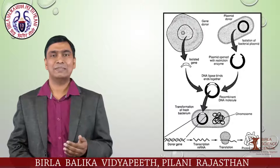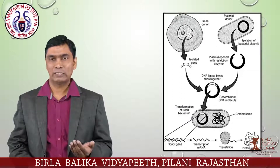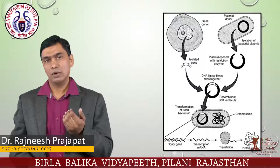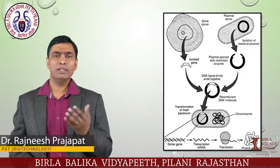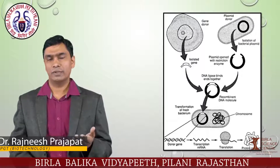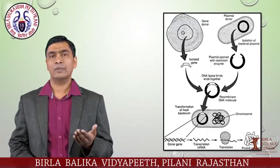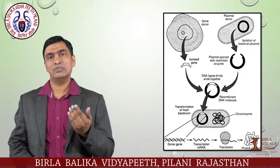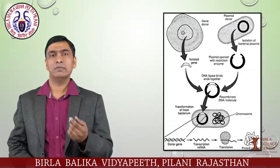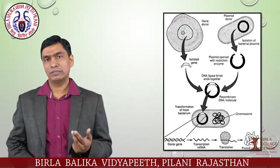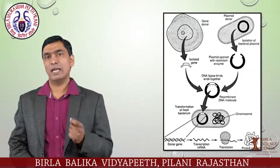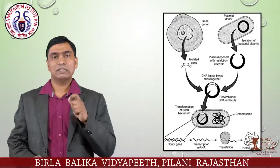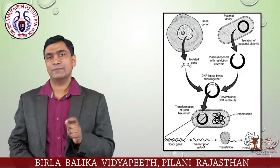To enhance the number of copies, the next step is cloning. For cloning purposes, we need to insert the recombinant vector into a host organism — mainly we prefer Escherichia coli (E. coli). This bacterium doubles within 20 minutes, so within 20 minutes our gene of interest becomes converted into two copies.